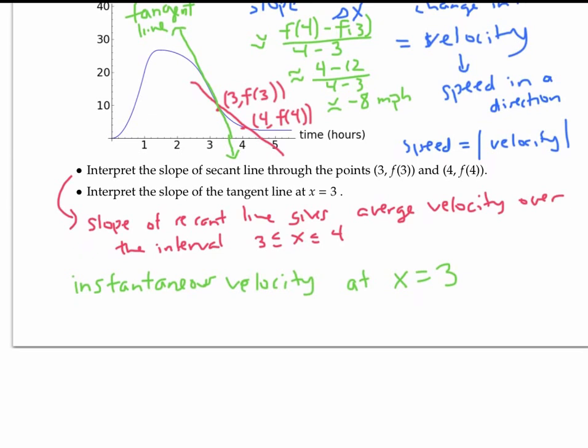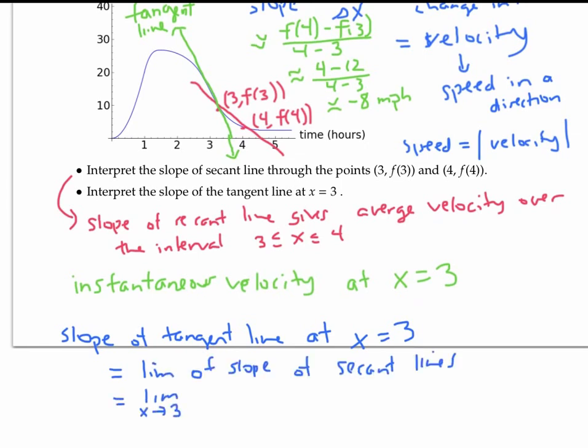We saw in a previous video that the slope of the tangent line is the limit of the slope of the secant lines. More precisely, the limit as x goes to three of f of x minus f of three, over x minus three.